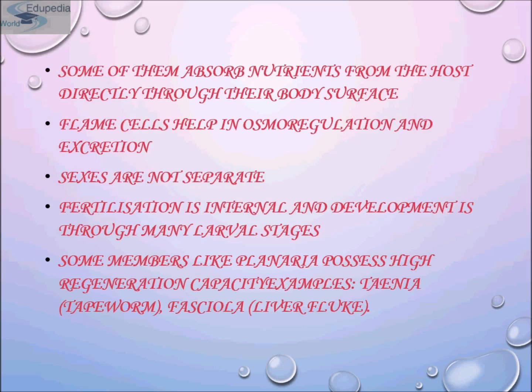Their fertilization is internal and development occurs through many larval stages. Some members like planaria possess high regeneration capacity. Examples include Taenia, commonly known as tapeworm, and Fasciola, known as liver fluke.